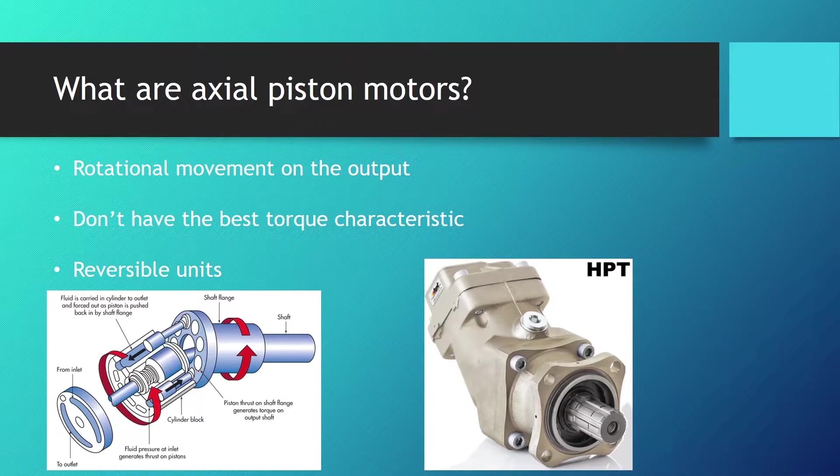If you forgot about axial piston units you should go back to section one and review the two lessons on axial piston pumps. Axial piston motors and all motors from the rotational hydraulic motors group are used when we need to have a rotational movement on the output.